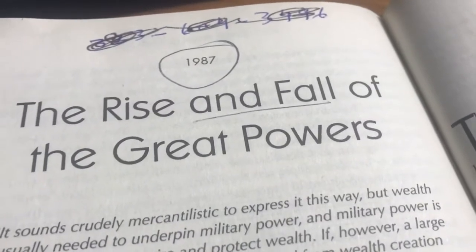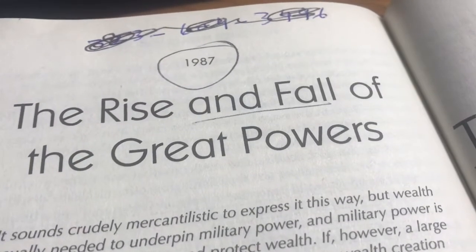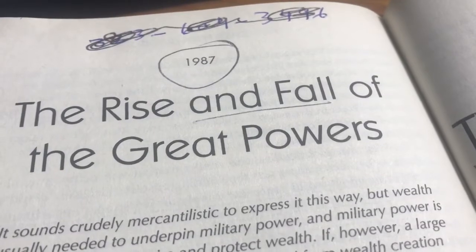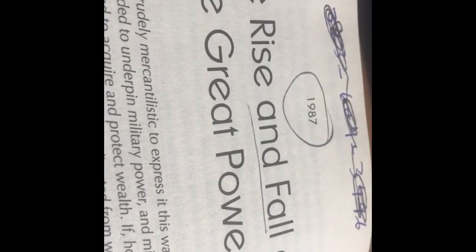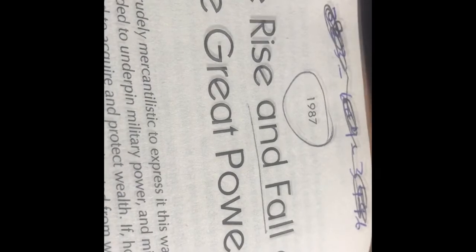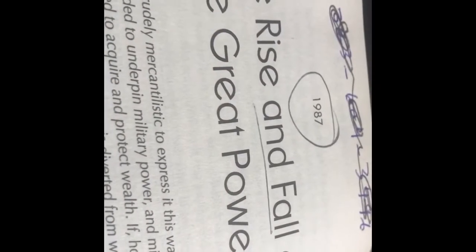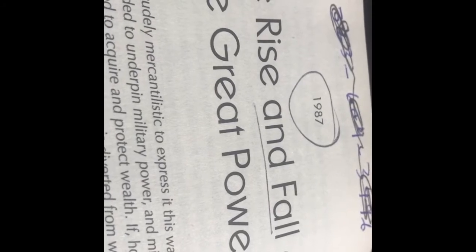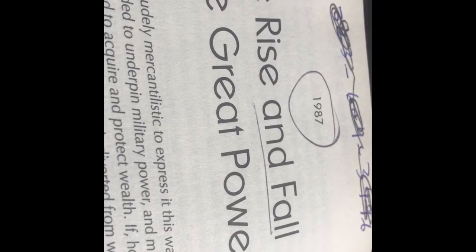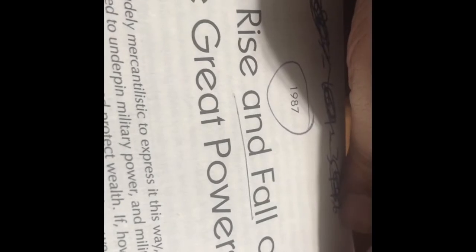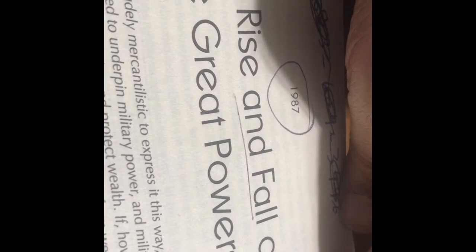The Rise and Fall of the Great Powers was written by Paul Kennedy in 1987. This book explains why some empires rise and some fall. The main message of the book is that an economic superpower tends to become militarily dominant too, which creates a vicious circle of high defense spending and low civil investment, and hence a decline of power. This book explores the rise of nation power from roughly 1700 to the end of the Cold War.